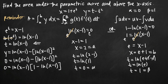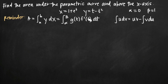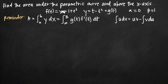We'll use the integral of g of t times f prime of t from alpha to beta. We already know alpha equals 0 and beta equals 1. Here f of t equals x and g of t equals y. We can plug in y directly for g of t, and for f prime of t we take the derivative of 1 plus e to the t term by term. The derivative of 1 is 0 and the derivative of e to the t is e to the t, so f prime of t equals e to the t.